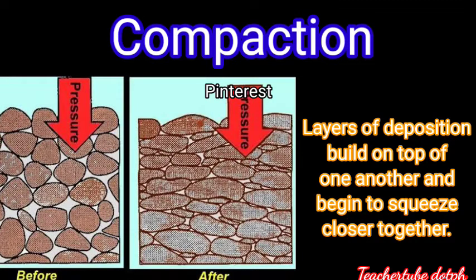Next is compaction. Layers of deposition build on top of one another and begin to squeeze closer together. In the image labeled 'before,' you can see the rocks arranged farther from each other, and in the image labeled 'after,' the rocks are already compacted.